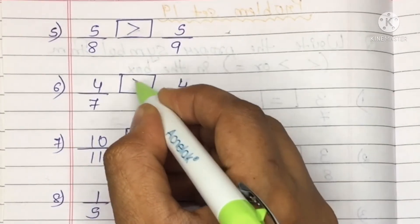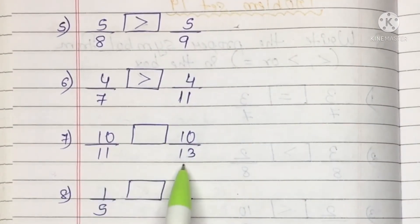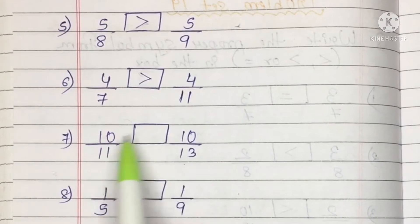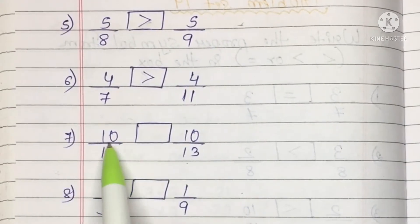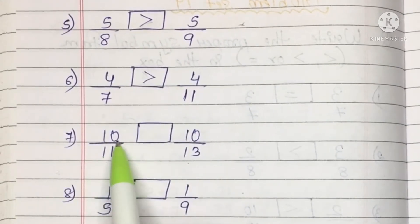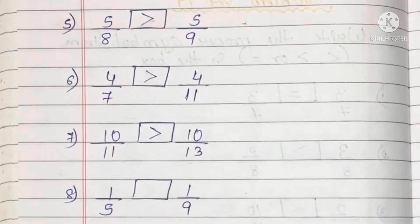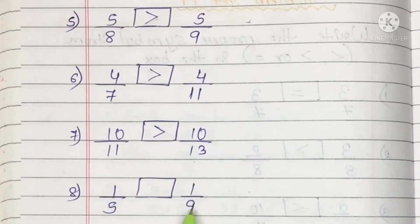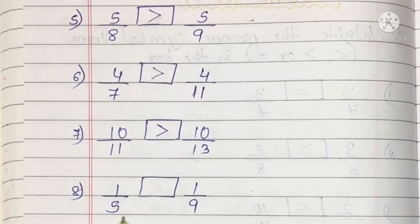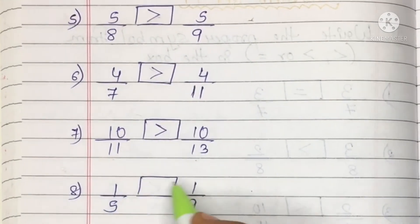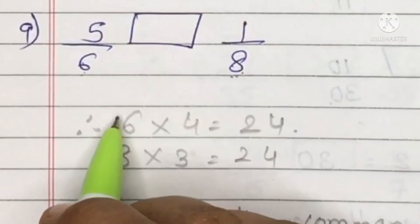Question 7: 10 upon 11 and 10 upon 13. Numerator is common, so check denominators — 11 is smaller than 13, so 10 upon 11 is the greater fraction. Question 8: 1 upon 5 and 1 upon 9. Numerator is common, so 5 being smaller means 1 upon 5 is greater.